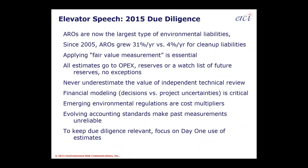I hope that background conveys that I may have a different point of view. For 2015 due diligence, first and foremost we're finding that asset retirement obligations are now the largest type of environmental liabilities. Since 2005, they've grown on average about 31% a year versus 4% a year for remediation or third-party site liabilities. Applying fair value measurement is essential to doing due diligence well. AROs are a big part of environmental liabilities, and fair value is the right way to calculate them.